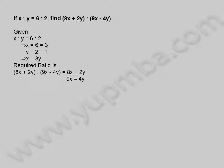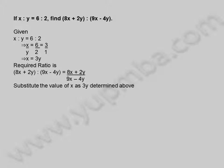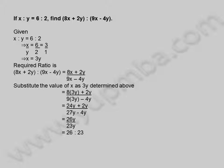The required ratio is 8x plus 2y is to 9x minus 4y, which equals 8x plus 2y divided by 9x minus 4y. Substituting x equals 3y: 8 into 3y plus 2y divided by 9 into 3y minus 4y, equals 24y plus 2y divided by 27y minus 4y, equals 26y by 23y. So 8x plus 2y is to 9x minus 4y is equal to 26 is to 23.